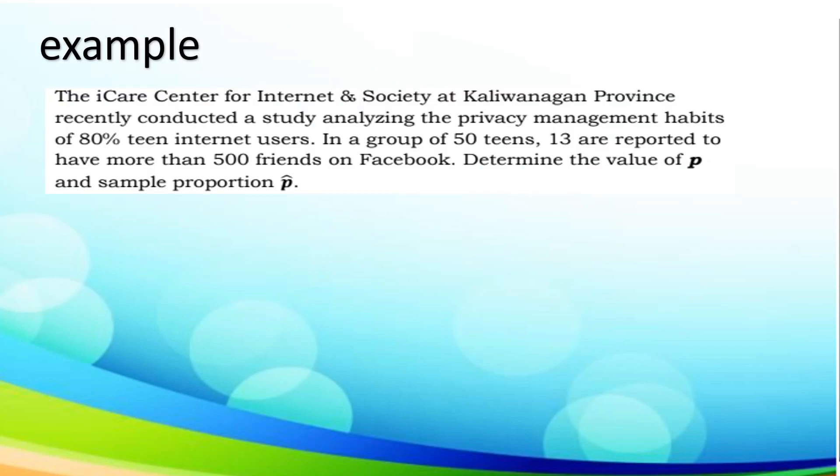Now, let us apply this in a given example. Let us identify the population and the sample proportion. The iCare Center for Internet and Society of Kaliwanagan province recently conducted a study analyzing the privacy management habits of 80% internet users. In a group of 50 teens, 13 are reported to have more than 500 friends on Facebook. Determine the value of p and sample proportion. Let us find p. It has been discussed that 80% of internet users, so converting it to decimal we have 0.8. To find now p-hat or the sample proportion, we are going to use p-hat equals x over n. Since x is 13 and n is 50, we can get the p-value which is 0.26.